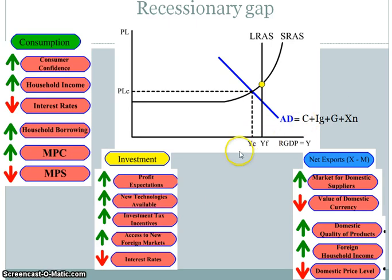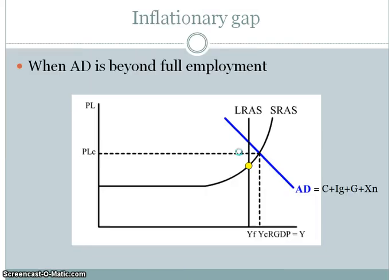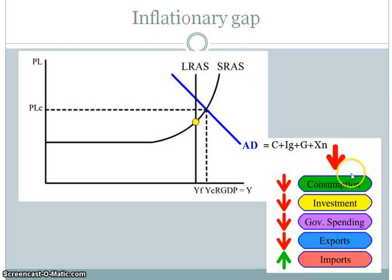The recessionary gap is when you're below the full employment level of GDP, but an inflationary gap is just the opposite — this is when aggregate demand is beyond the full employment level. The goal here is to reduce aggregate demand so that the price level will come down and you will be at full employment. Instead of increasing AD, you need to decrease AD, looking at the different components in the opposite way from the recessionary gap.